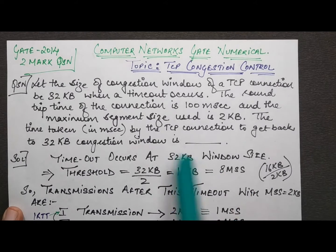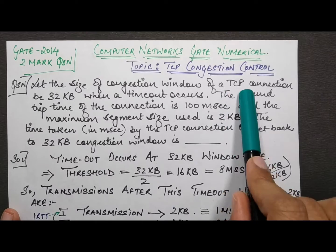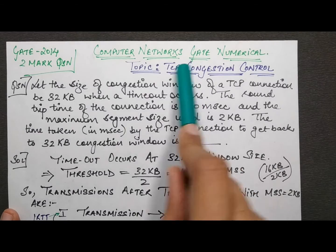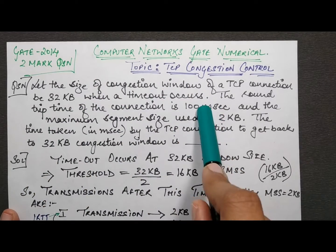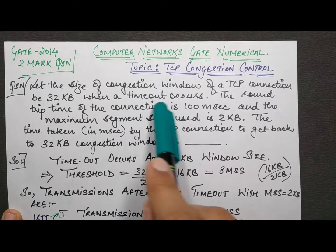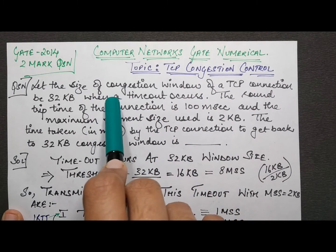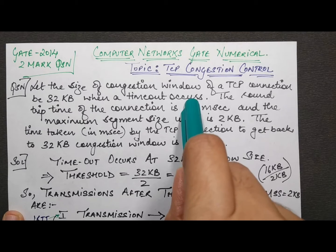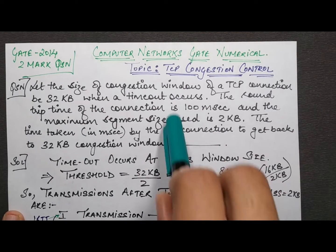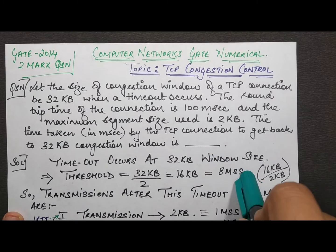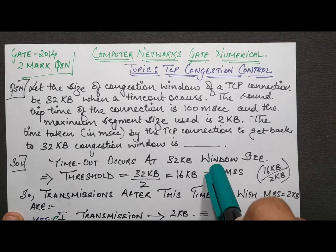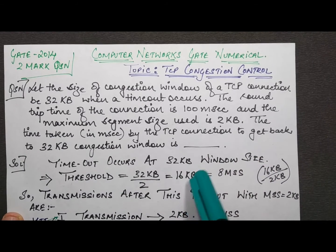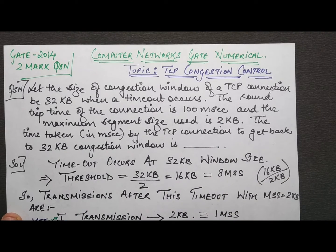The question says: let the size of the congestion window of a TCP connection be 32 KB when a timeout occurs. When a timeout occurs, you need to find out a new threshold and set the window size to the minimum — which may be one MSS (maximum segment size) or the minimum segment size given in the question.